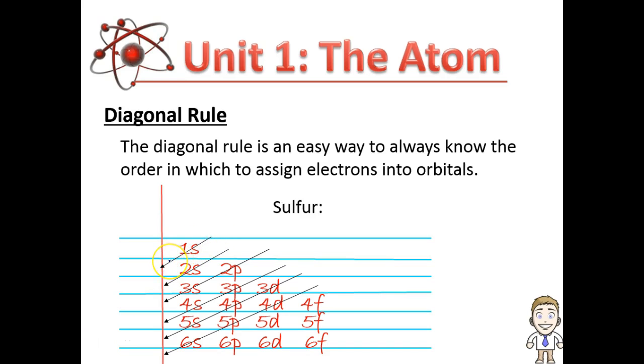Follow the arrows. First, they fill up the 1s, 1s2. Next, they fill the 2s, 2s2, after 2s. Follow the arrows, they fill the 2p. After 2p, they fill the 3s, after 3s, they fill the 3p.